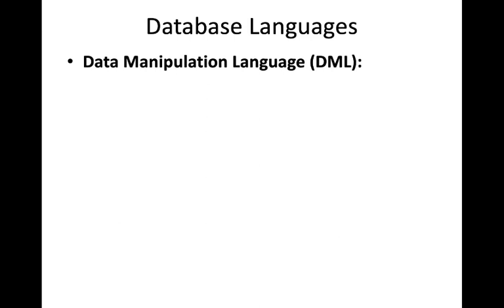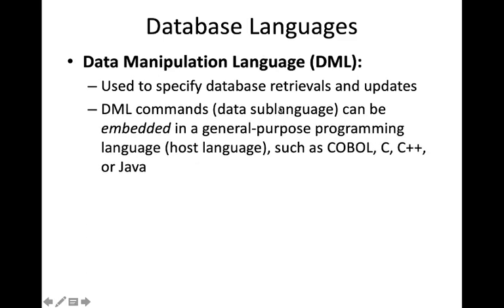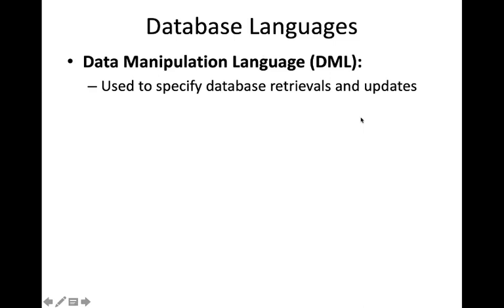The second type of language is Data Manipulation Language (DML). After the database schemas are compiled and the database is populated with data, users need to manipulate the database. For example, in a college automation software, students may enter personal data, view marks, or check attendance. DML is used to specify database retrieval and updates — retrieval, updates, insertion, deletion, and modification of data are all done using DML.